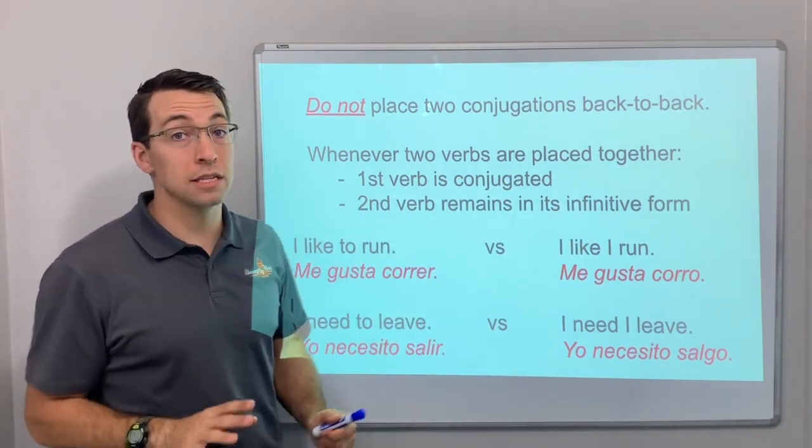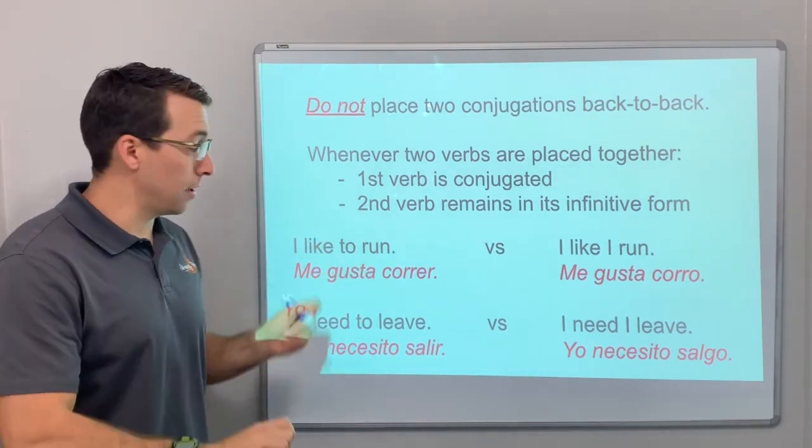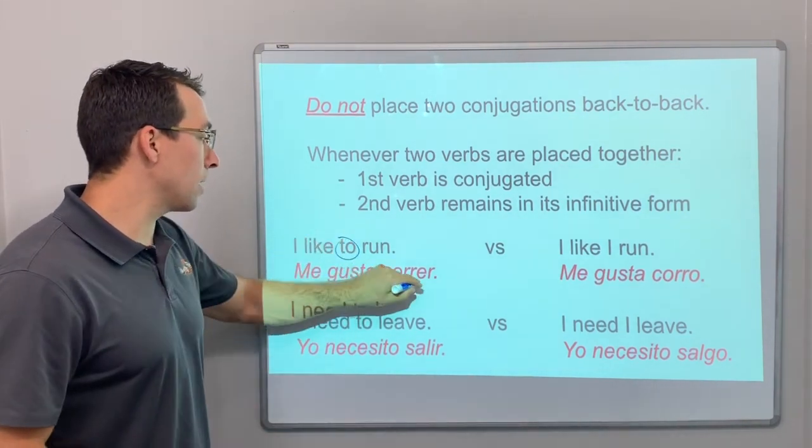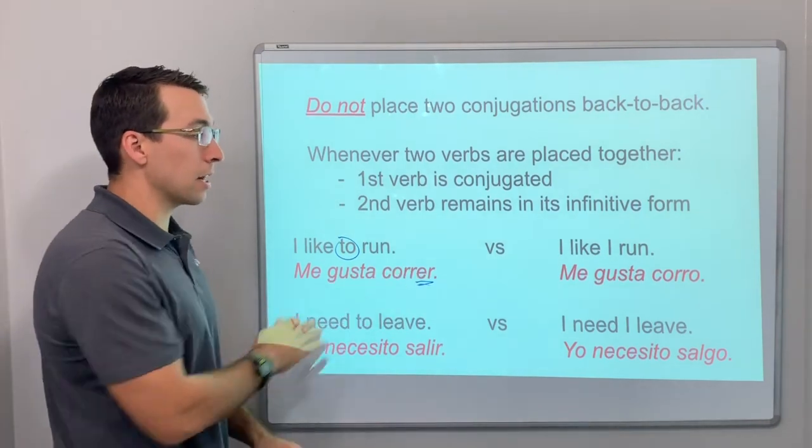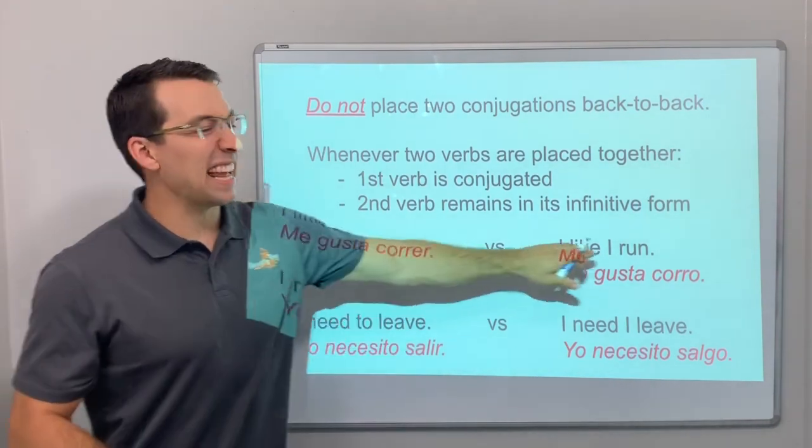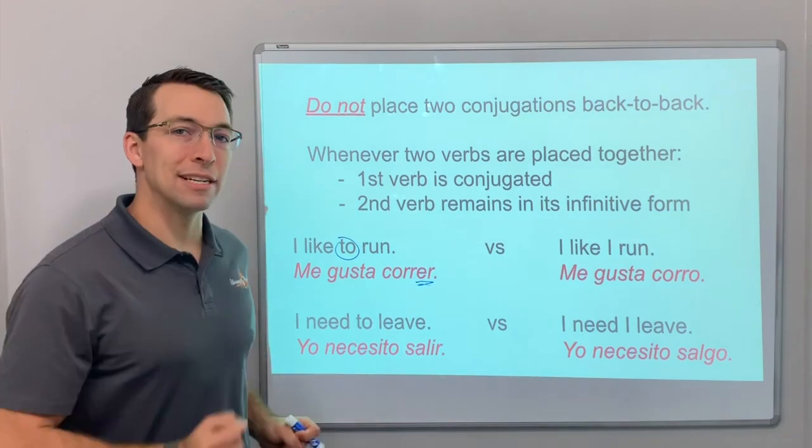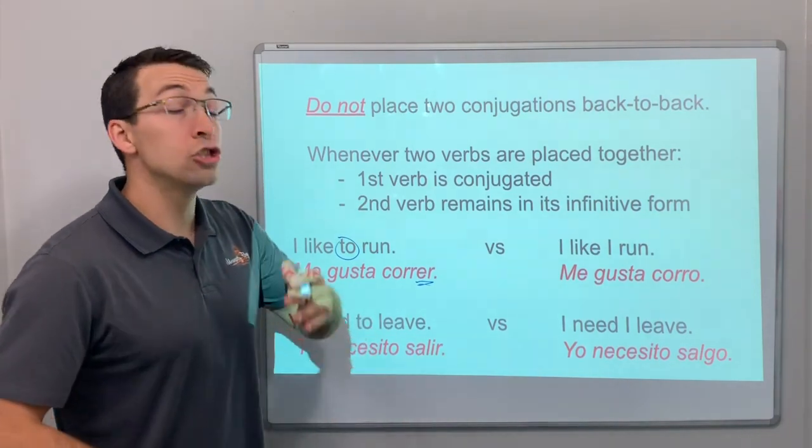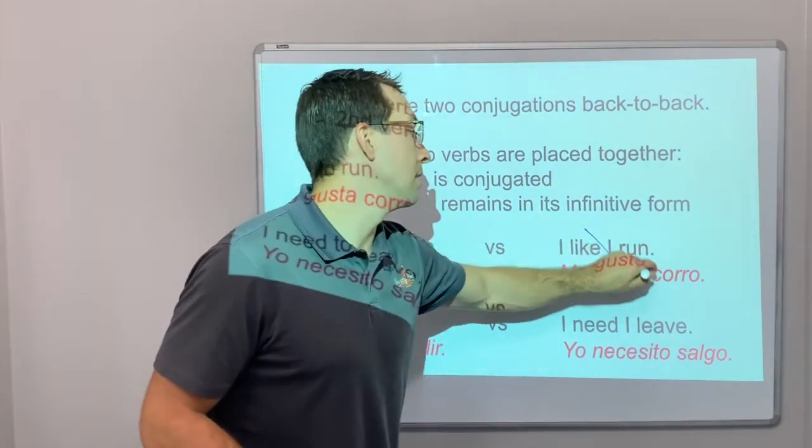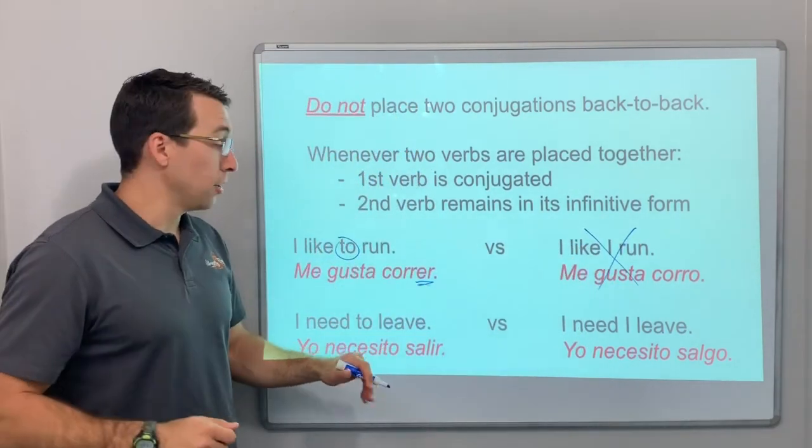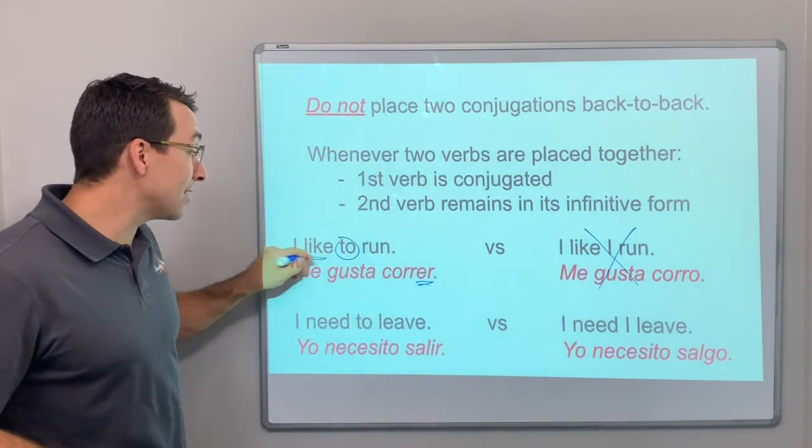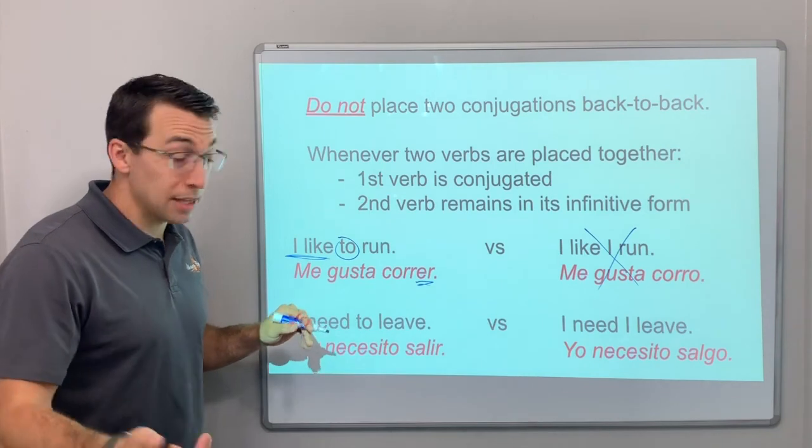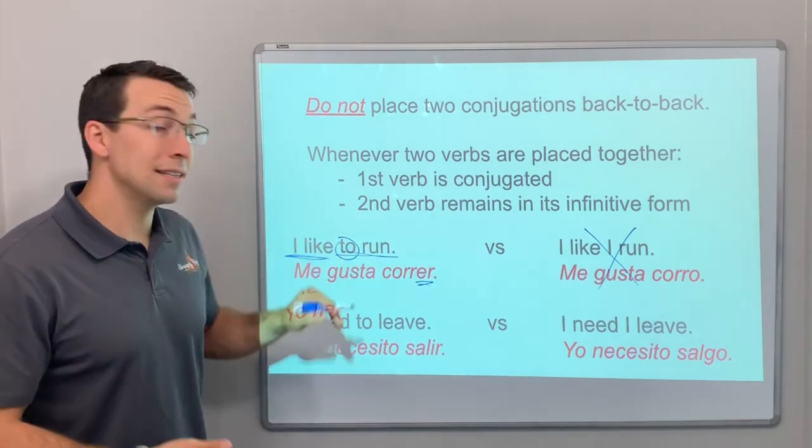Here's the example. I like to run. Look, to run, correr. Me gusta correr. Do we say I like I run? I like I run every day. No, no, no. I like to run every day. So this is wrong. The first verb, I like, conjugated. The second verb, to run, is the infinitive.